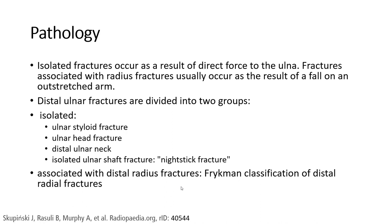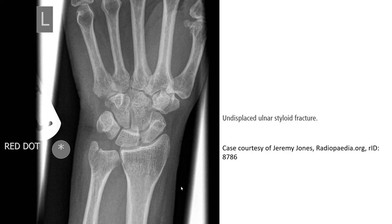Frigman classification of distal radius fracture. This is the first case example of the isolated distal ulnar fracture — we call it a styloid fracture.